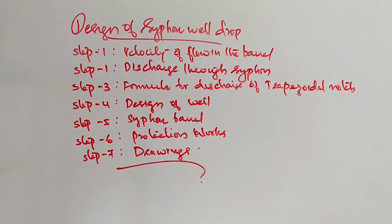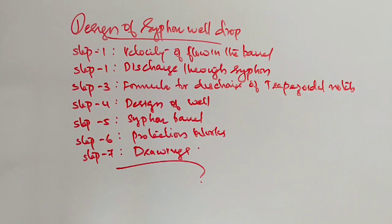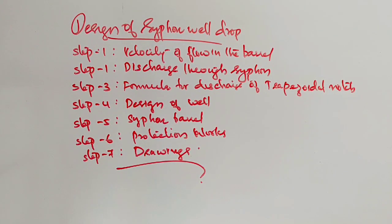Design of siphon well drop: Step 1, velocity flow in the barrel. Step 2, discharge through siphon. Step 3, formula for discharge of trapezoidal notch. Trapezoidal notch top width and bottom width dimensions. Fourth step is design of weir: upstream weir and downstream weir, levels and length. Fifth is siphon barrel, RC Hume Pipe. Sixth is protection work. And last is detailed drawing.